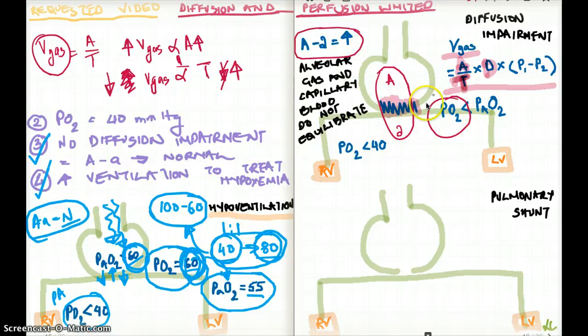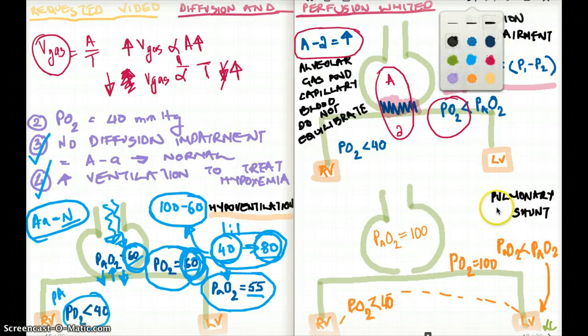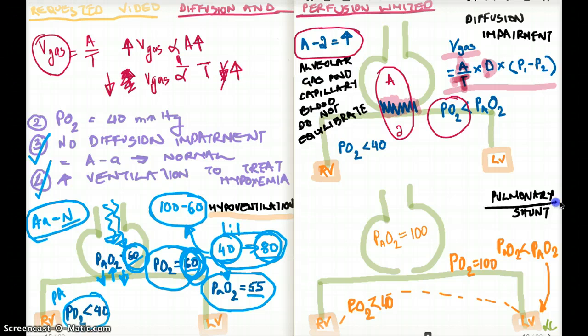Giving them more oxygen might equilibrate the partial pressure of oxygen, but that doesn't mean that this person doesn't have any problem. So that's our diffusion impairment graph. And last of all, let's talk about pulmonary shunt.